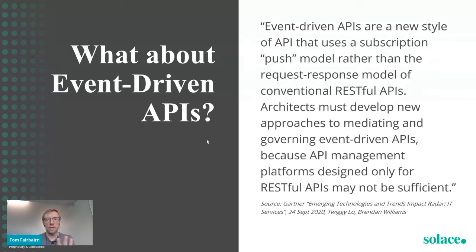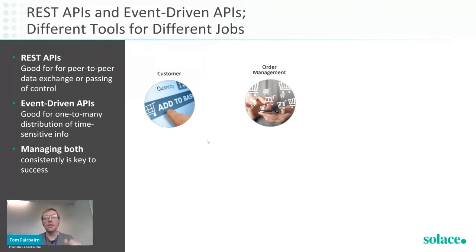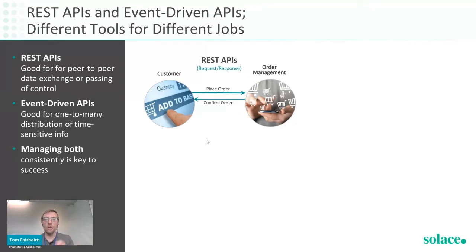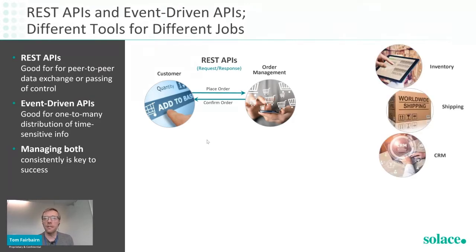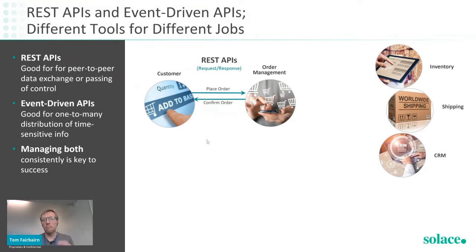Let's think about e-commerce. Imagine I as a customer talk to an order management platform — that sounds like an excellent case for a REST API: I place an order and wait for a confirmation. But in the back end, multiple systems deal with that order: inventory, shipping, customer relationship management. We could call these synchronously, API after API, but in the event-driven world we take a different approach.